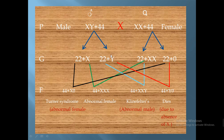The last type of fertilization is between the sperm containing 22 plus Y and the ovum that is empty of X chromosome — 22 plus 0. The result will be 44 plus Y0. This fetus will die due to the absence of the X chromosome, which is called the live chromosome. It is necessary for every human to contain at least one X chromosome. Y does not matter in this regard — without X, the organism cannot survive.